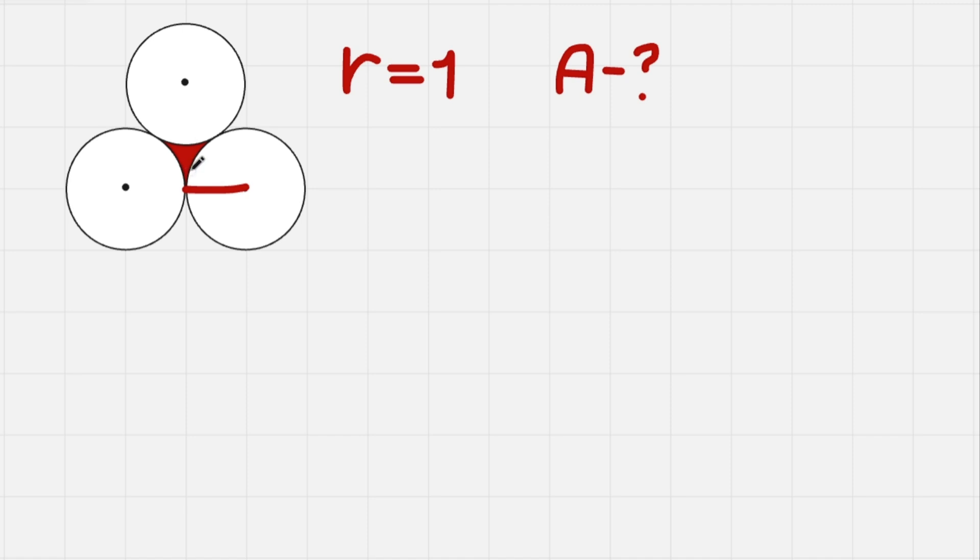So to find this area, we first need to find the area of something different. The only thing we know is radius, so we need to make use of it. So what I would do, let's take all of the radiuses and connect them. Connect this, connect this with this, and this with this. And as you can see, we got a triangle.